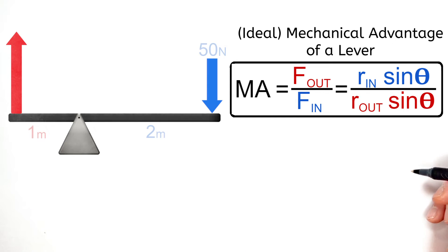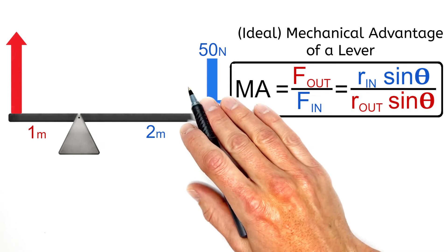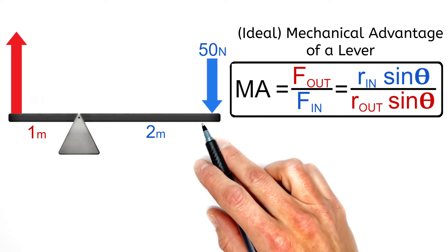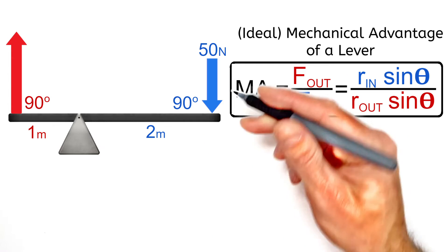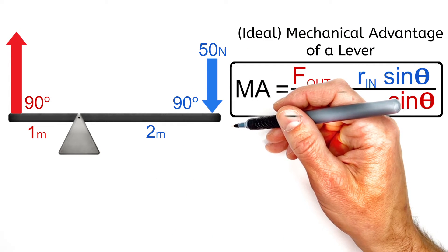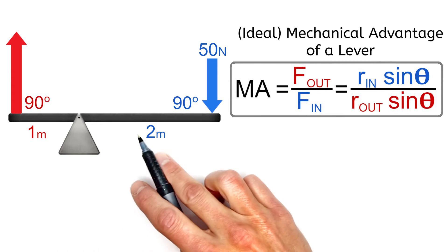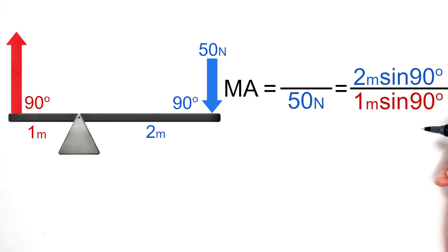So let's put some numbers to this, and I'll show you the consequence of angling one of these forces. See, starting with the typical case of having our forces perpendicular to the lever, if we push on this side of the lever with an input force of, say, 50 newtons, plugging in the dimensions of the lever as well as our input force over here...